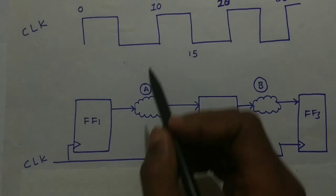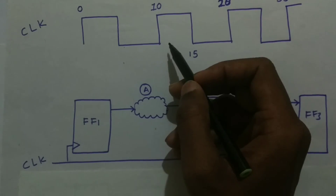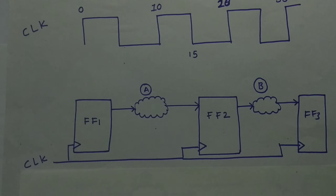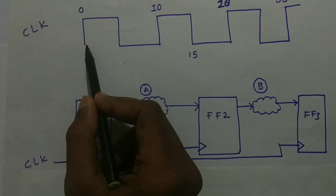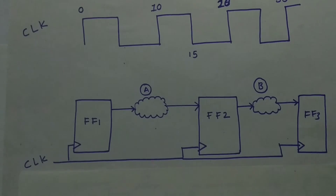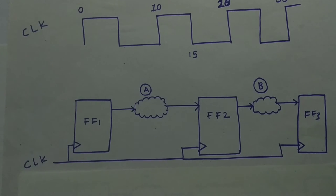Then our data will reach at 12 nanoseconds due to this delay. What will happen? Flip-flop 2 will not capture the correct data. As you can see, from 0 to 12, our flip-flop checks only at the positive edges because it's a positive-edge flip-flop. If our data is coming at 12, it's sending incorrect data from flip-flop 1 to flip-flop 2. So this is a big problem.